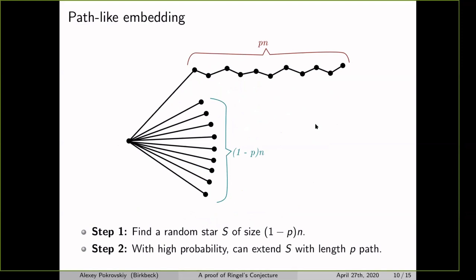The randomized embedding is constructed in two steps, the opposite order from the star-like embedding: first find the star, then find the path. In the first step, find a random star of size (1−p)n where p = 1%. Then show that with high probability you can extend it with a path of size pn using all remaining colors. The key is producing a random star where the leftover vertices and colors are nicely distributed.